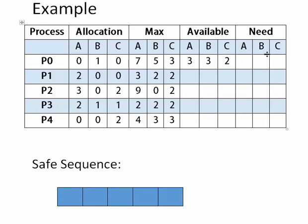First, we have to find out the need matrix. The formula is very simple: Need = Maximum - Allocation, meaning we subtract the allocated resources from the maximum resources. For process P0, the maximum of A is 7 and allocated is 0, so 7 minus 0 is 7. For B, it is 5 minus 1, which is 4, and for C it is 3 minus 0, which is 3.